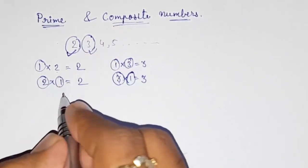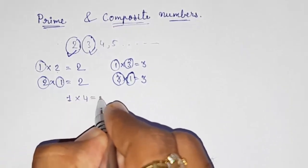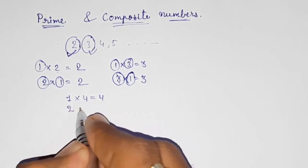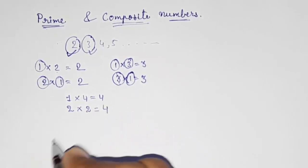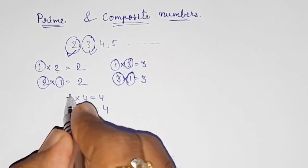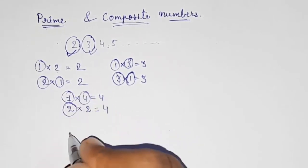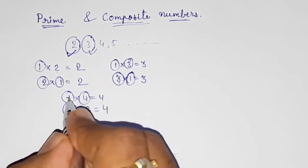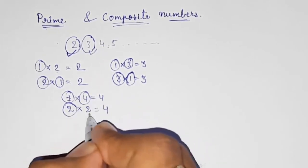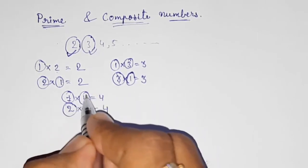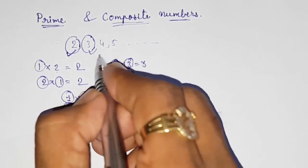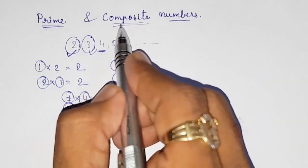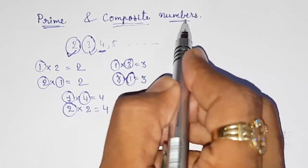But what about four? One into four is four, four into one is also four, but two into two is also four. So here we are getting three factors: one, two, and four. It is divided by one, two, and four — three different factors. Other than one and the number itself, one more factor is there, so this is not a prime number. Since it is not a prime number, we say this is a composite number.